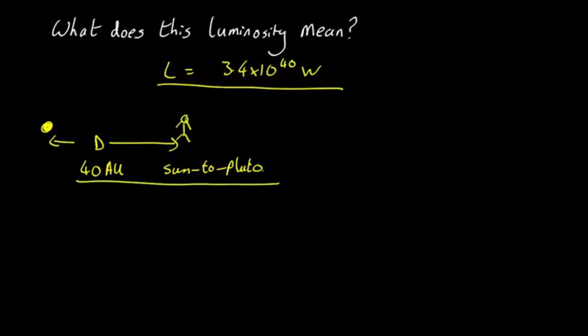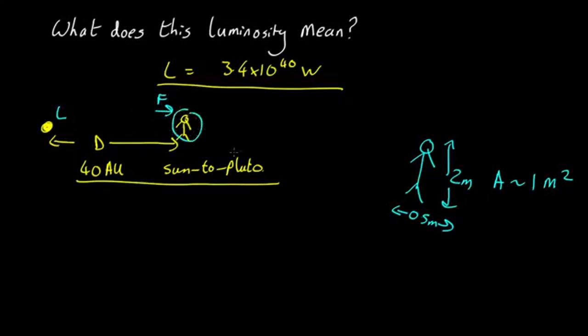Well, we can calculate how much radiation hits a person. We've got a person about 2 meters tall, maybe about half a meter wide. So their surface area is about 1 square meter. We've got a luminosity here, the flux there. The energy absorbed by a person is going to be the flux times the area.